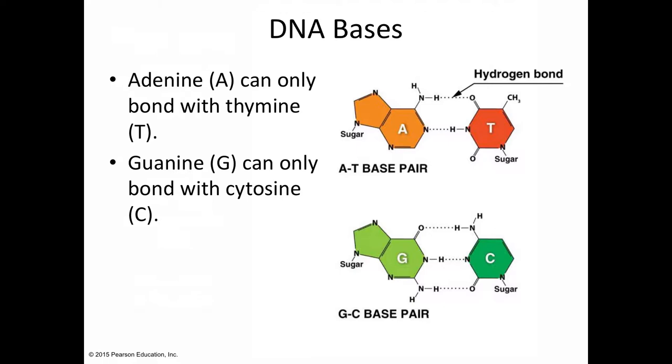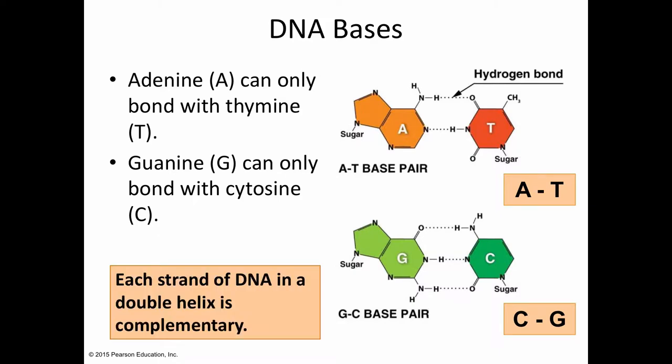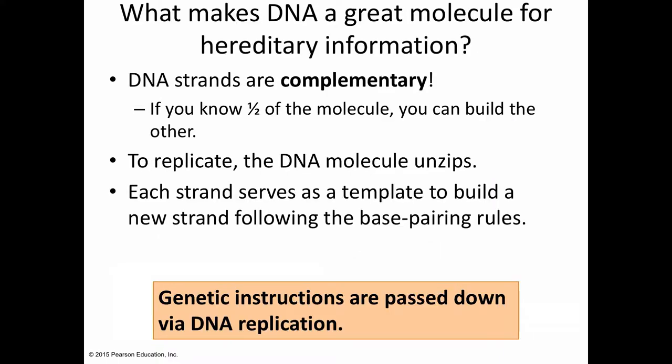Our other base pair is guanine, represented by G, and cytosine, represented by C — guanine and cytosine bind together, held by hydrogen bonds. So adenine always binds to thymine, and guanine always binds to cytosine. These complementary portions of the DNA molecule fit together like a puzzle, and it's important that they bind just that way because it makes the molecule uniform in shape. Remember A-T and G-C — that's going to become important.